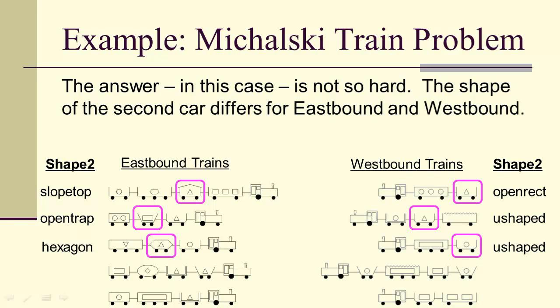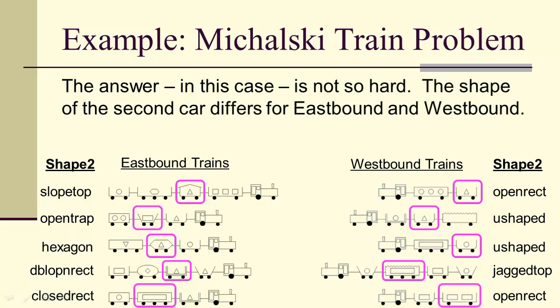Slope top, open trap, and hexagon only for eastbound; open rectangle and U-shaped only for westbound. So we see that there is no overlap between shapes of the second car for eastbound trains and shapes for westbound trains.